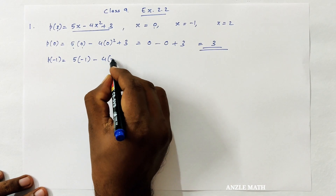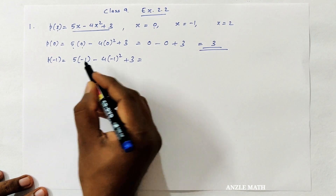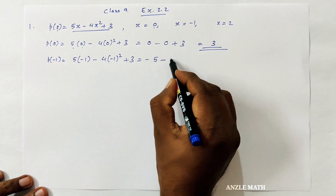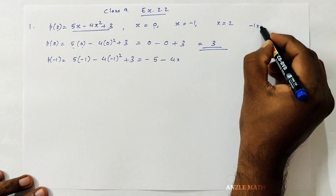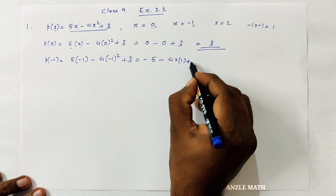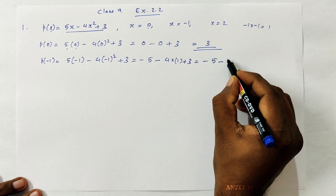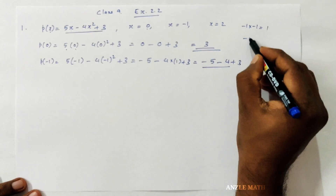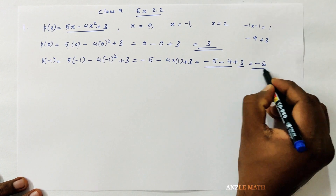Next, x is equal to minus 1: 5 into minus 1, minus 4 into minus 1 squared, plus 3. Minus 1 squared is 1, so this is minus 5 minus 4 plus 3. Minus 5 minus 4 is minus 9, plus 3, so the answer is minus 6.